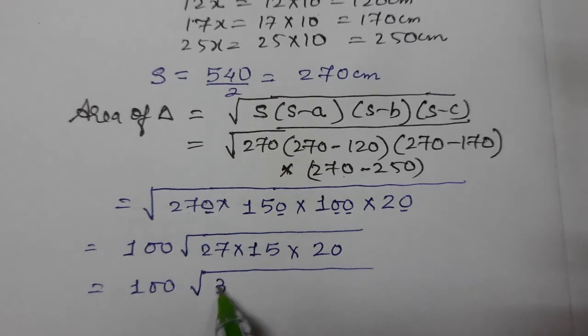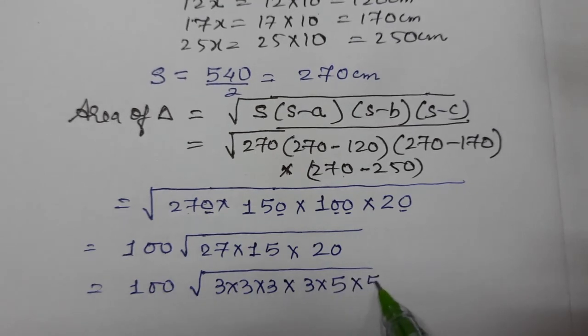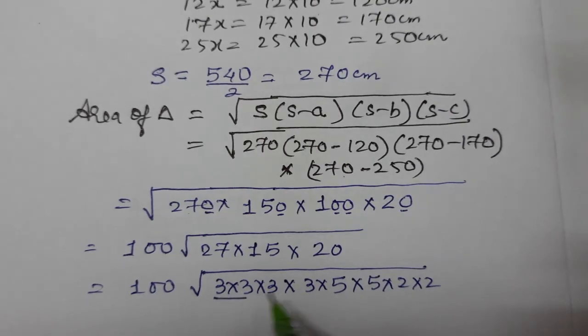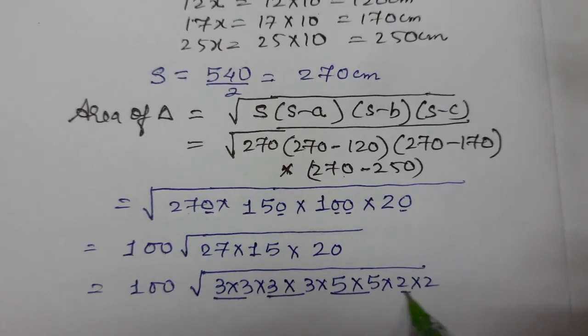27 factors: 3, 3 times 9 is 27. 15 factors: 3 times 5. And 20 factors: 5 into 4, 5 into 2 into 2. So we have 3, 3, 5, 2, 2.